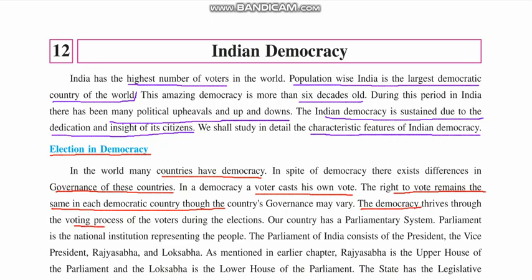Our country has a parliamentary system. Parliament is the national institution representing the people. In Parliament there are two houses — the upper house and the lower house. The upper house is known as the Rajya Sabha, and the lower house is known as the Lok Sabha. The Parliament of India consists of the President, the Vice President, the Rajya Sabha, and the Lok Sabha.